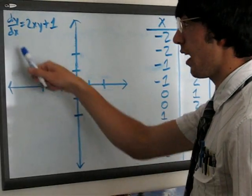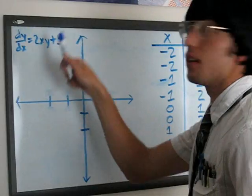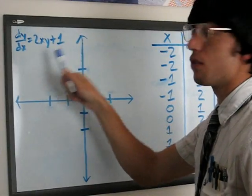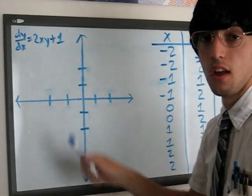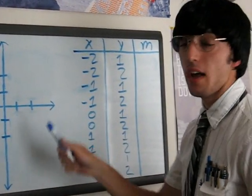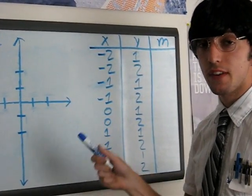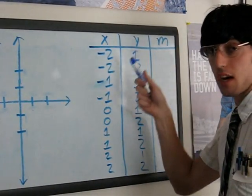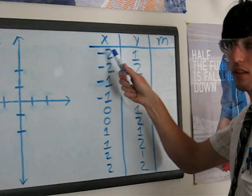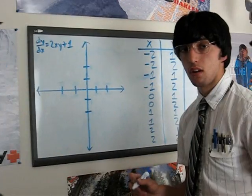Okay, for example, when we have dy... Shut up! We have dy over dx equals 2xy plus 1. A slope field shows you the slope at every point on the graph. To find this, you need to make charts. Charts must have x, y, and m for slope.